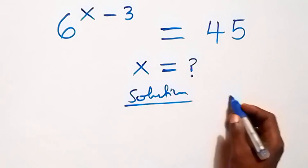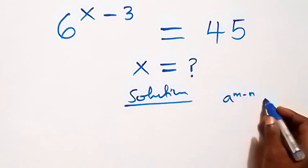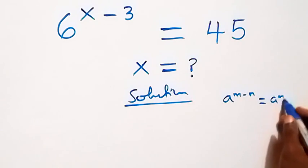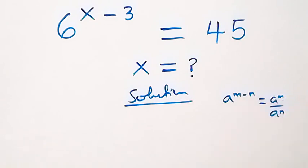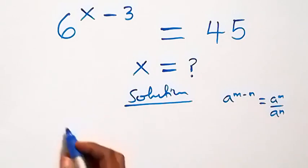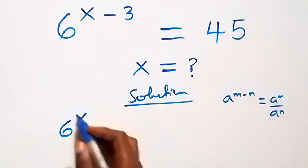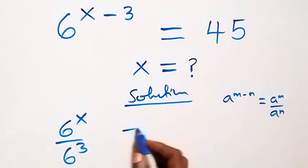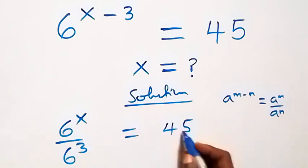This follows from when we have a raised to power n minus n, which can be written as a raised to power n over a raised to power n. That is, we can rewrite this as 6 raised to power x over 6 raised to power 3, equals to 45 on this side.